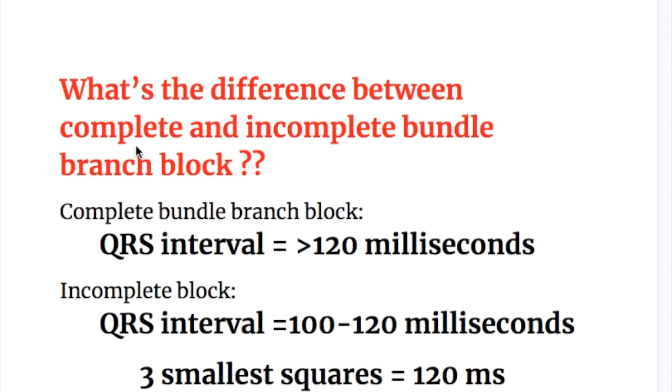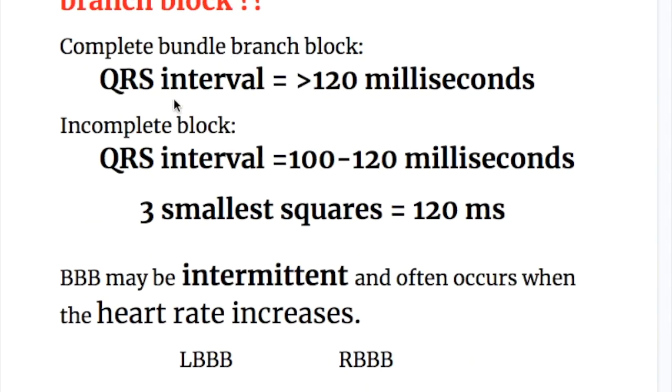So there may be a complete or an incomplete bundle branch. So what's the difference between the complete and incomplete bundle branch? In complete bundle branch, the QRS interval is more than 120 milliseconds. And in incomplete bundle branch, the QRS interval is between 100 to 120 milliseconds. And how many smallest squares make 120 milliseconds? Three smallest squares make 120 milliseconds.